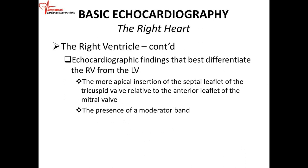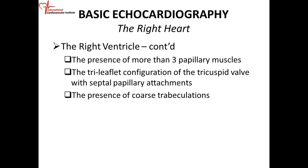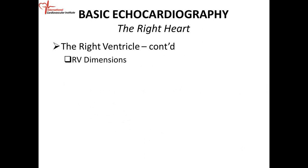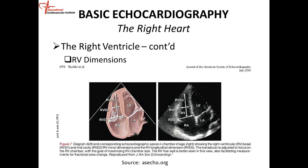Those are two very important features to identify the right ventricle. The presence of more than two papillary muscles — three or more, because the tricuspid valve has three leaflets and you tend to have three papillary muscles or more. The tri-leaflet configuration of the tricuspid valve with septal papillary attachments is also key. And remember that the right ventricle tends to have much more trabeculations than the LV.